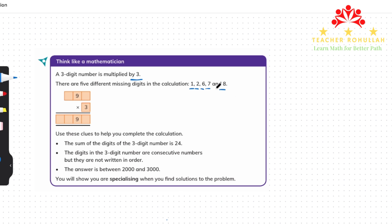So there are some clues also given and it says, use the clues to help you complete the calculation. The first one says the sum of the digits of the three-digit number is 24.